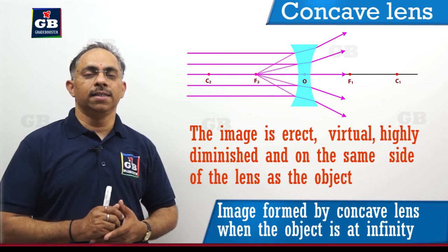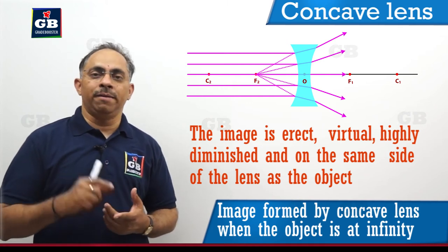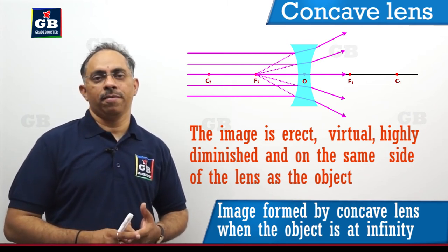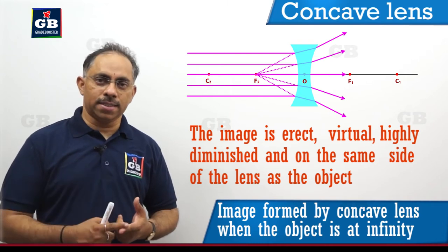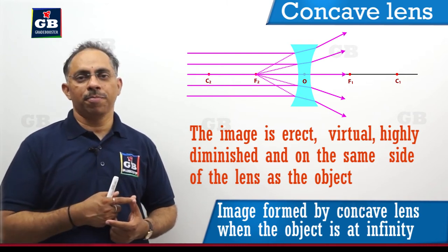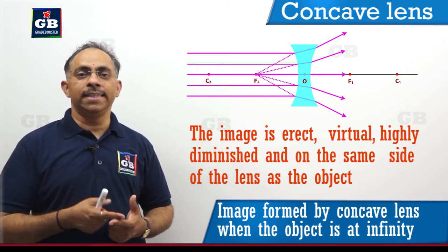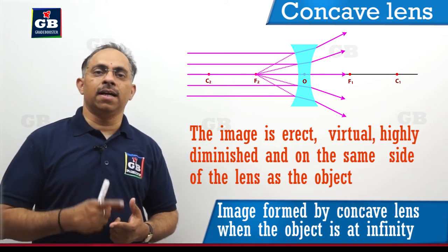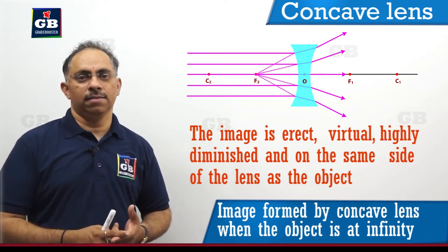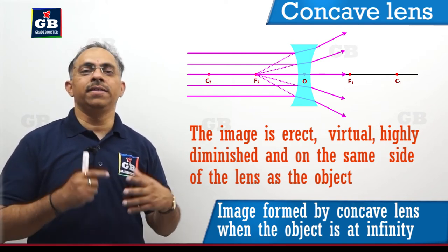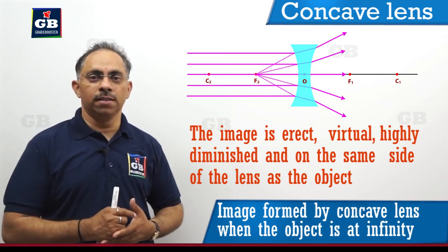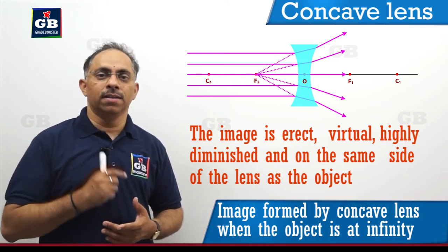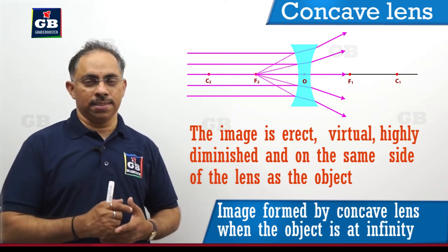The image formed is highly diminished, erect with respect to the object, and it is virtual — meaning it cannot be caught on a screen. This is the nature of the image formed by a concave lens when an object is placed at an infinite distance.